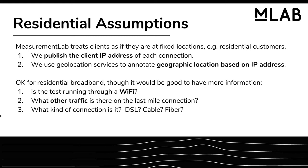We basically set things up in such a way that we can aggregate by IP address. IP address is kind of the best thing to aggregate by because we have a few other bits of signature information we can use to distinguish whether there might be multiple clients at the same IP address. But really, even when we do deduping or try to reduce the impact of very high traffic clients, it's at the IP level.